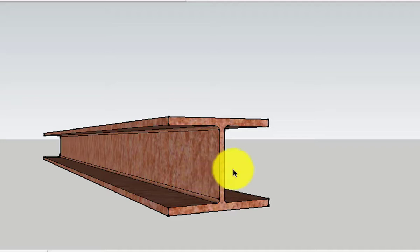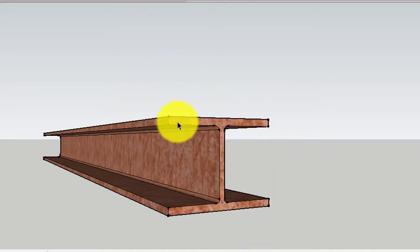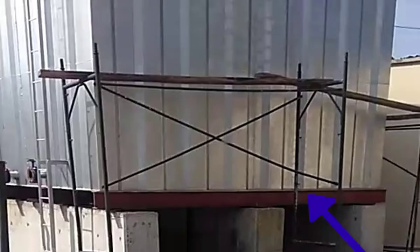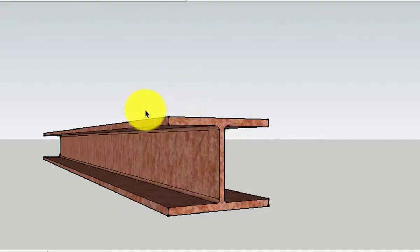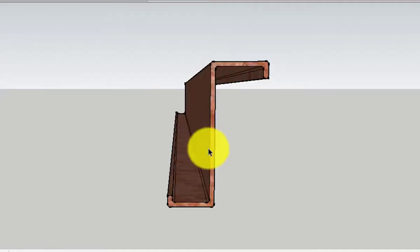The I section is the most common steel section used in construction. It is used for lintel beams, columns, and other kinds of beams in frame structures. It is also commonly used as a rafter in roof trusses.